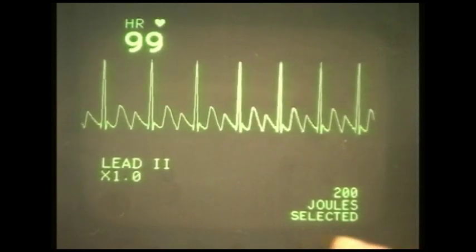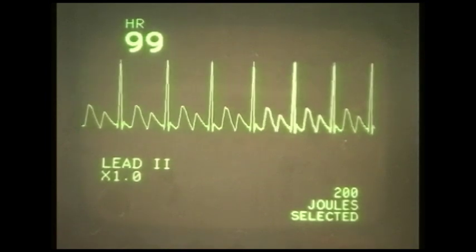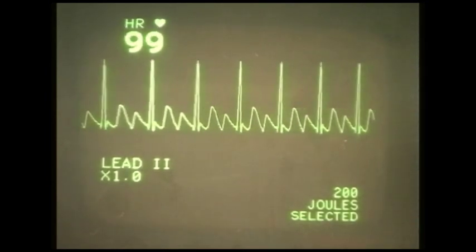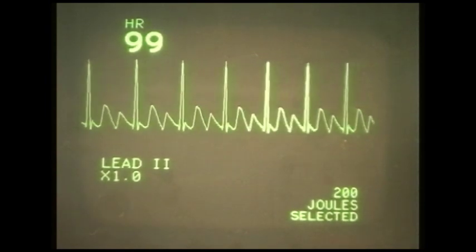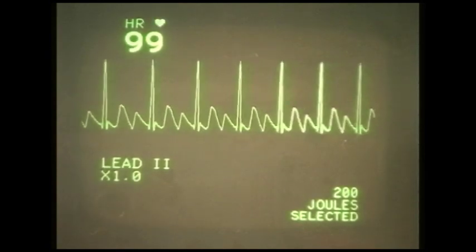But the AV node, the reason that the QRS rate is much lower is the AV node can't keep up with this increased atrial depolarisation. So you've got two atrial contractions to one ventricular contraction? Ventricular contraction. We would call that a two-to-one AV block.